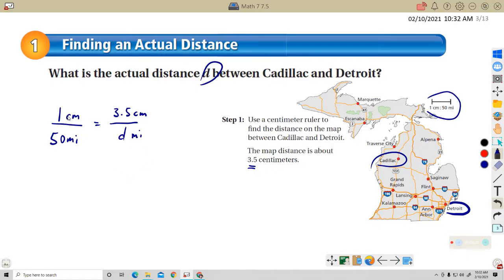So one times D is D. And so I'm cross multiplying. And then 50 times 3.5. So using a calculator. 50 times 3.5. 175 miles.